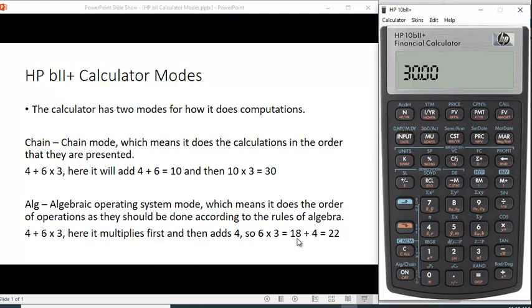So we would get 18 plus 4, or 22. Let's see if that's the case here. Okay, so now it's in algebraic mode. 4 plus 6 times 3, and we get 22.